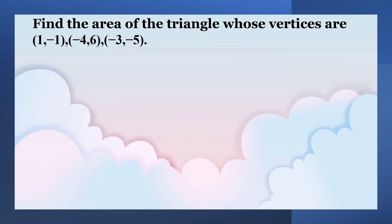Find the area of the triangle whose vertices are (1, -1), (-4, 6), and (-3, -5).